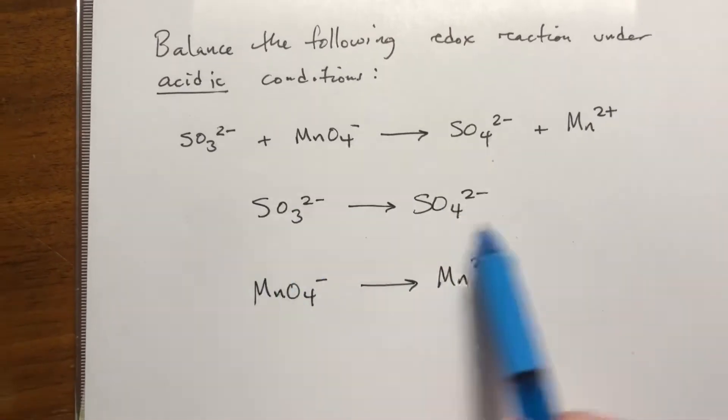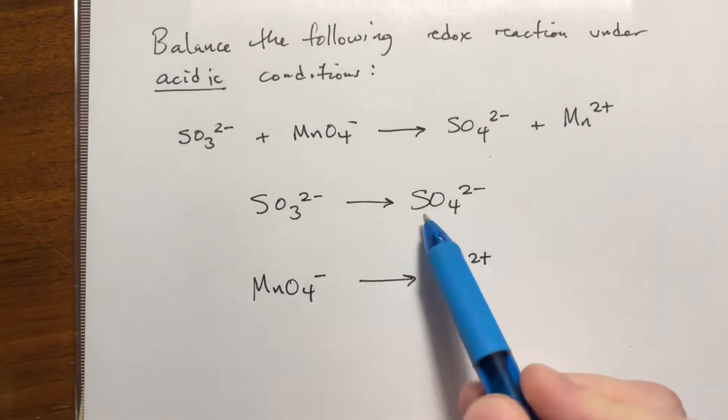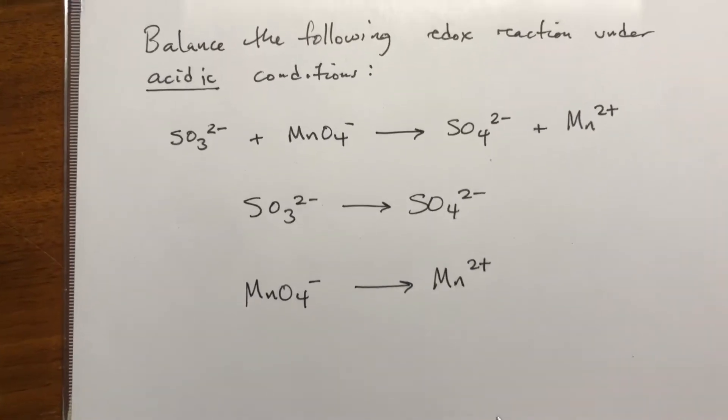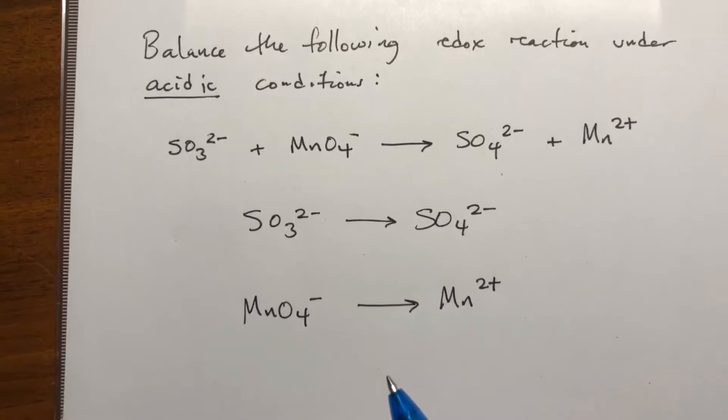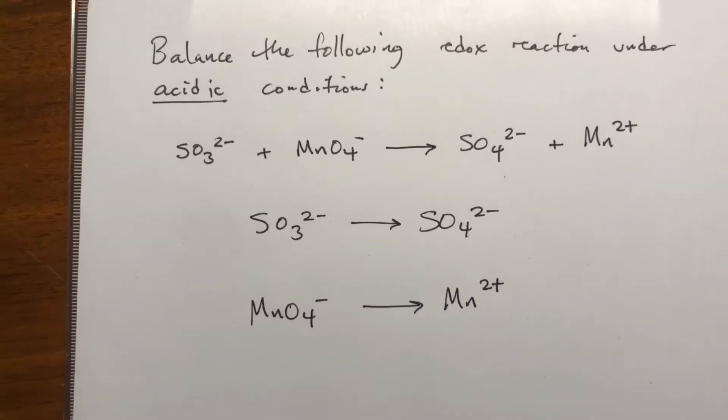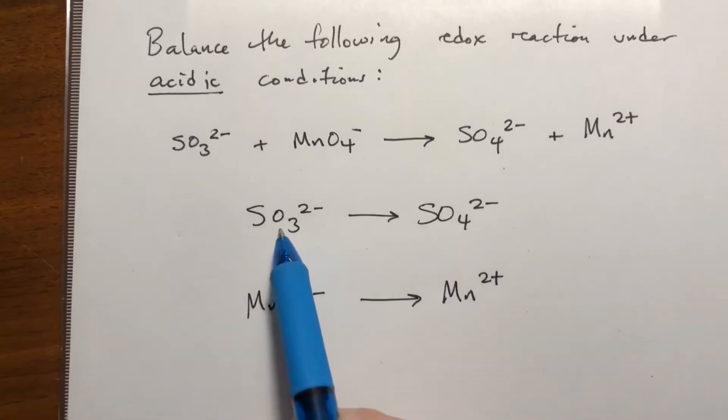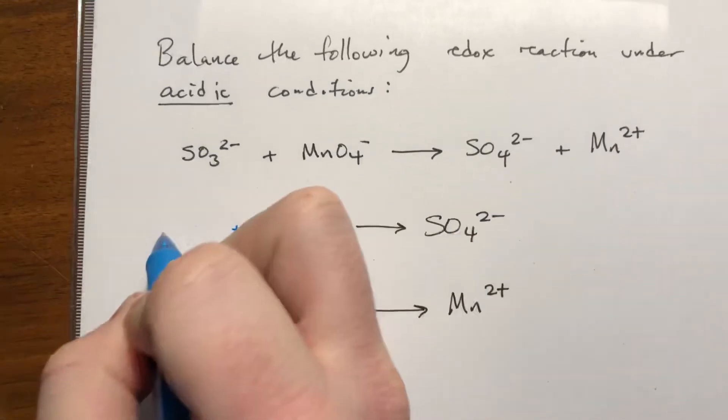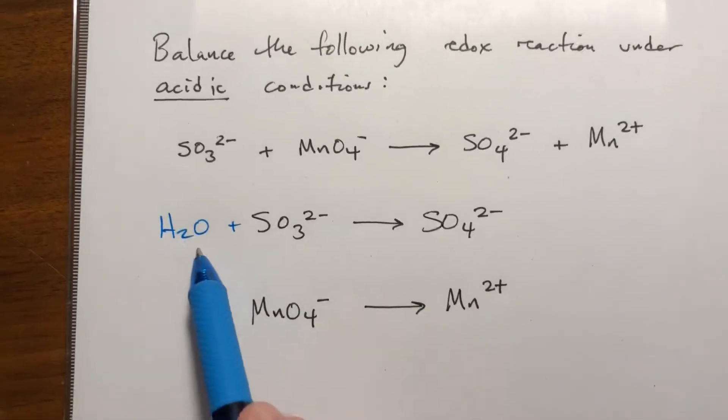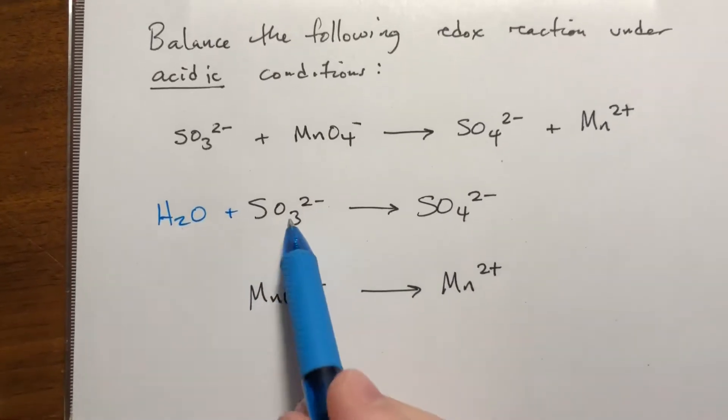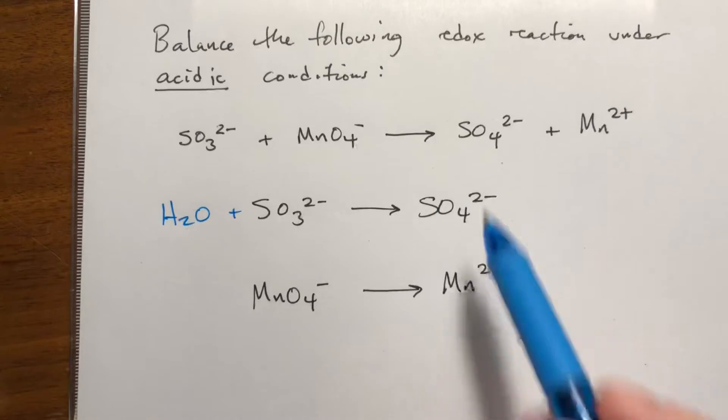So we have one sulfur here. We're just doing this top one first. One sulfur here, one sulfur here, so that's good. With redox reactions under acidic conditions you can add water or H+ anywhere you need to along the way. So we have three oxygens here and four oxygens here, so we're going to need to add a water to this side to increase. This is our only source of oxygens that we have. So now we have four oxygens on this side, four oxygens on this side.